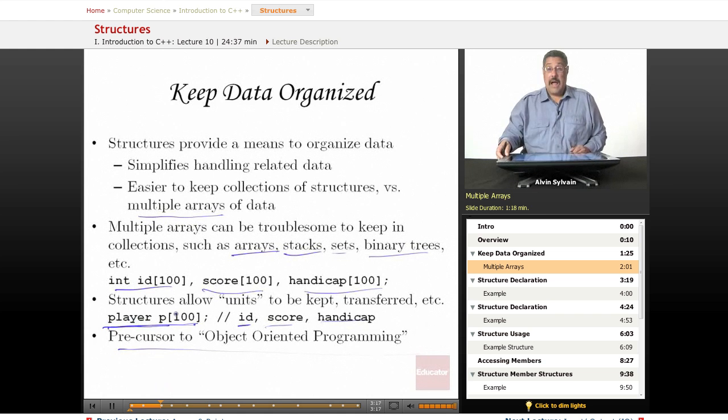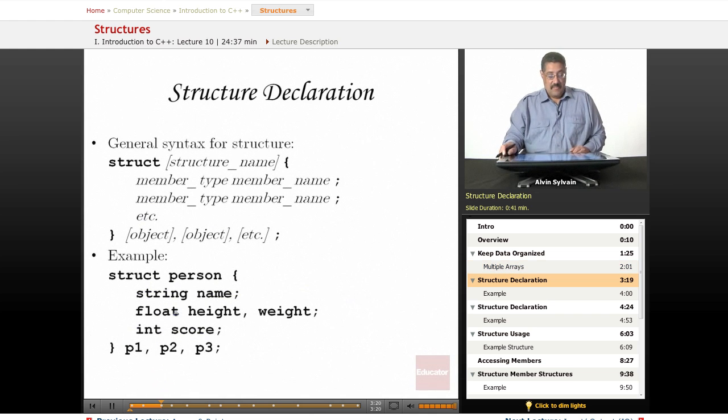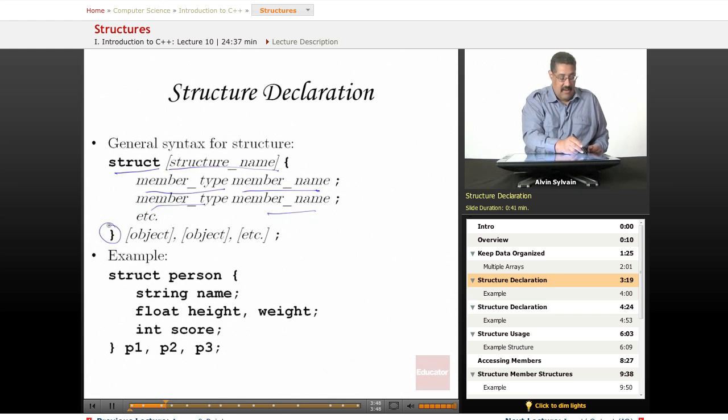Here's our general declaration syntax for declaring a structure. We have the struct keyword. I've got square brackets here in italics because you don't have to give it a structure name. You should, but you don't have to. If you don't, it's considered an anonymous struct. Then we have the type of the member and the name of the member, as many as you need, then end with a curly brace.